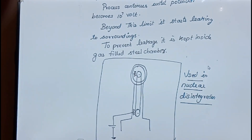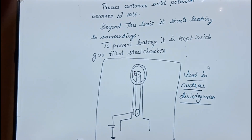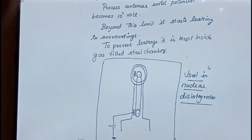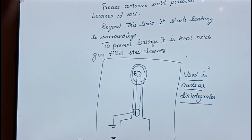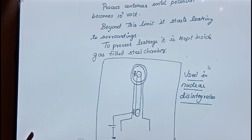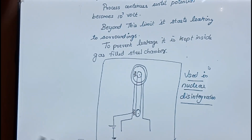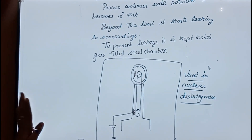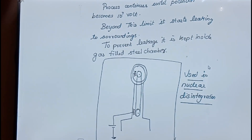The last point is the uses. The Van de Graaff generator is used in nuclear disintegration. So to summarize, we covered the principle, construction, working, and uses of the Van de Graaff generator.